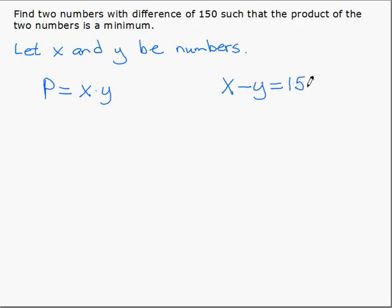So this is a secondary equation that we use to remove or eliminate one of our variables. If we solve this equation for x, we get x is equal to 150 plus y and we can replace x in our primary equation or the equation we want to minimize.